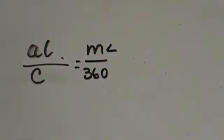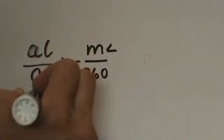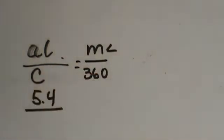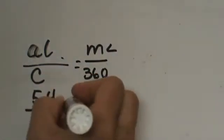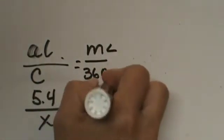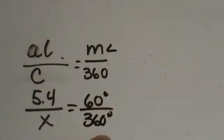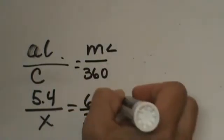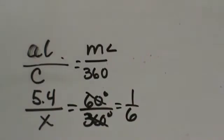Let's plug in what we know. We know the arc length from this problem is 5.4, so plug in 5.4, and circumference we don't know so that is x. Then angle measure we just decided it was 60 degrees and 360 is the total of the circle. Now you can look at this and this reduces down to 1/6 because it is 1/6 of the circle.